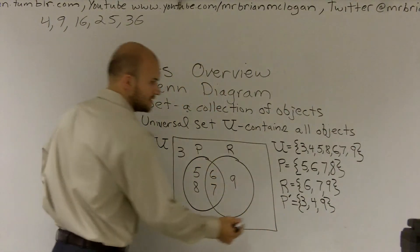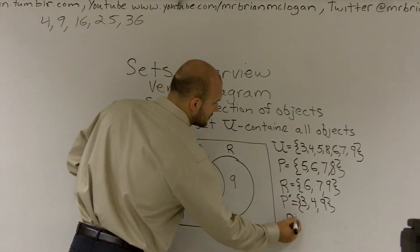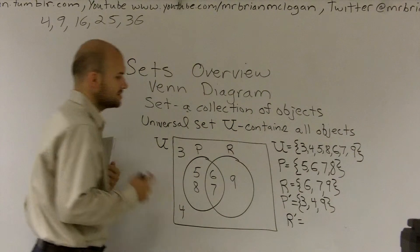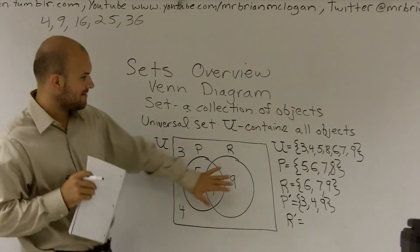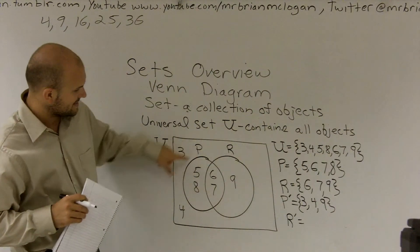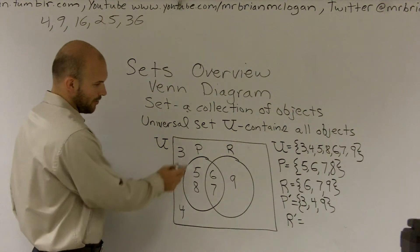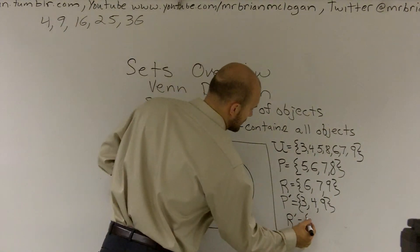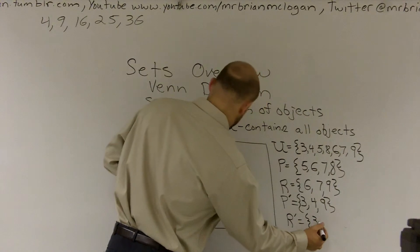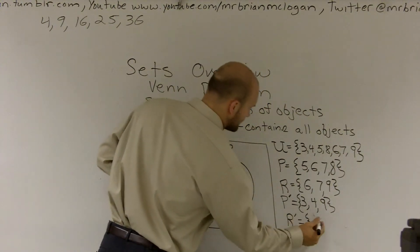Then, I'm going to go ahead now, let's look at R prime. So when I look at R prime, I see everything that's not in R but that's in my universal set. So what I notice is that's three, four, five, and eight. I'm sorry. Yeah, three, four, five, eight.